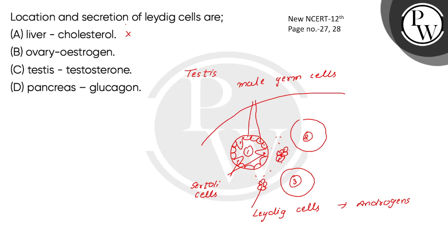This option about the liver is incorrect because there is no location of Leydig cells in the liver, nor in the ovaries, nor in the pancreas. The pancreas has glucagon, insulin, and is a heterocrine gland.